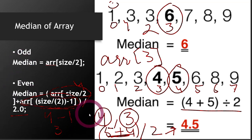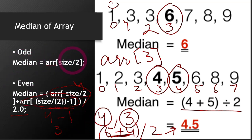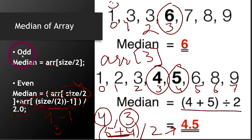So that's how you calculate the median, and to program it, you just have to write these two formulas into your code. You will use an if-else block to first check the size of the array, see whether the count is odd or even, and then use these formulas accordingly.